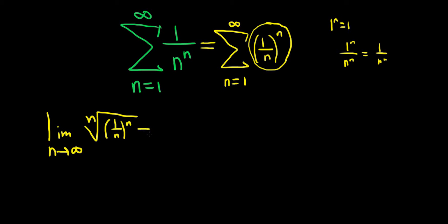So the nth root cancels the n, so we're left with the limit as n goes to infinity of 1 over n. And when you take this limit, you get 0.